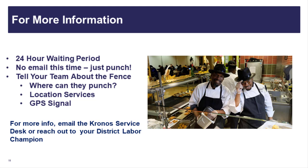After submitting your coordinates, remember it will take 24 hours for Kronos to update your location information and build your fence. The system will not send you any notification when it's complete. While you're waiting, tell your team where they can punch, make sure they have location services enabled on their phone, and if they're in a basement or metal building, have them try moving towards an outside entrance if they're having trouble punching. After 24 hours, your employees can begin punching in and out using their mobile devices.